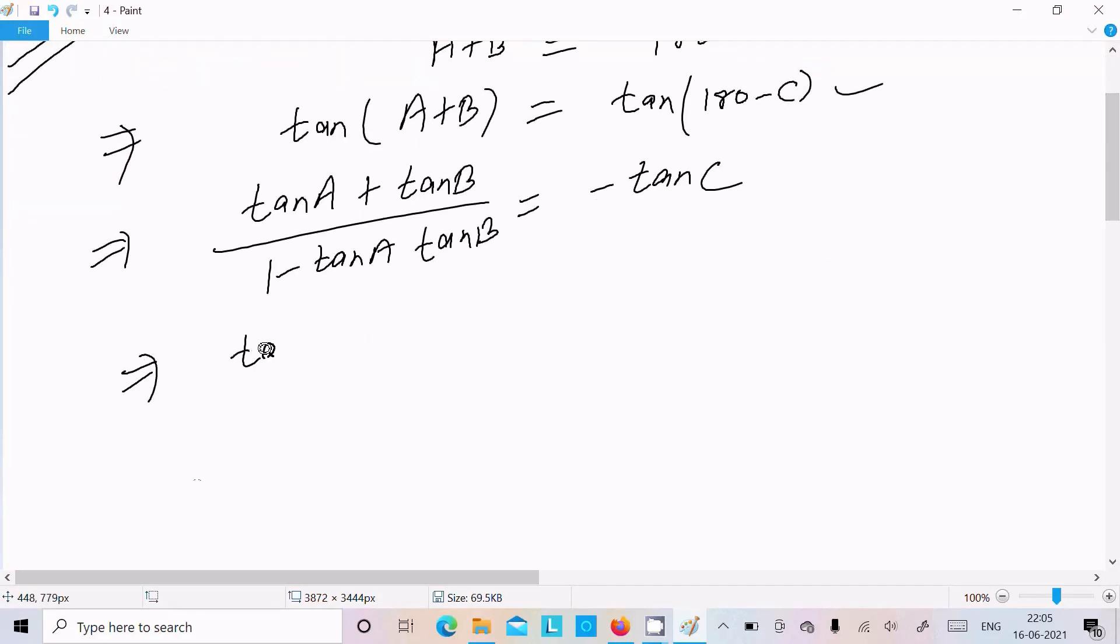There after, let's do the cross multiplication. This is tan A plus tan B divided by 1 minus tan A into tan B equals minus tan C.